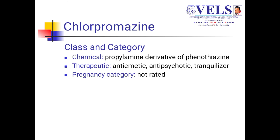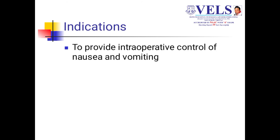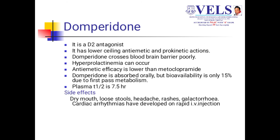The next class is chlorpromazine. It comes under the anti-emetic, antipsychotic, and tranquilizer group. Mechanism of action: it prevents nausea and vomiting by inhibiting the dopamine receptor. It is indicated for intraoperative control of nausea and vomiting. Next is domperidone — it is a D2 antagonist with a ceiling anti-emetic and prokinetic action.